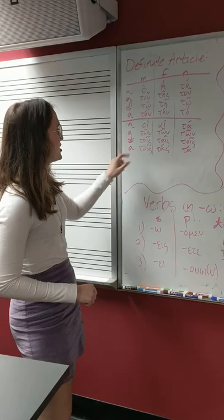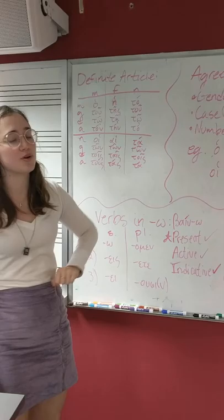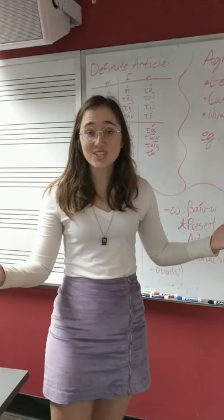So jumping right in, we've got masculine: ho, to, to, ton, ho, to, to, tons. Feminine, we've got he, tes, te, tane, high, ton, tais, tas. Neuter, we've got to, tu, to, to, and ta, ton, ta, ton, tois, ta.